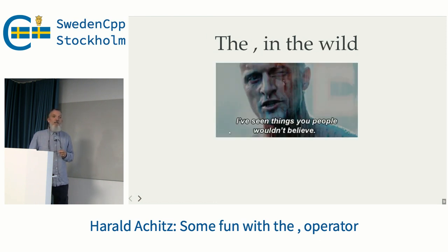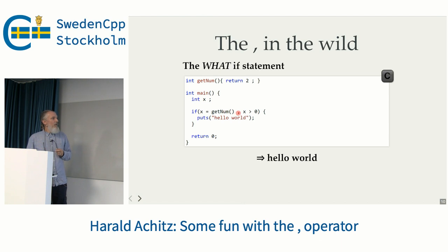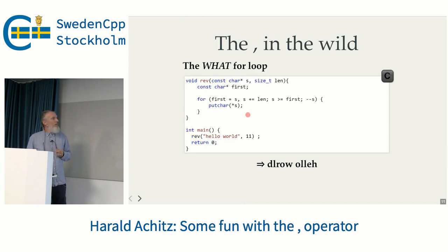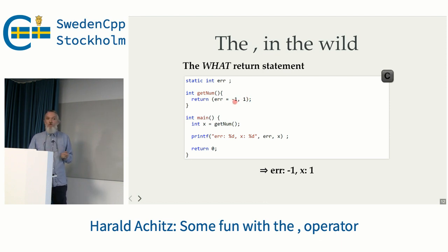Comma operator in the wild — what existing code looks like. Here we have some variable, we assign it, and after this we check the condition using the built-in operator — that's very fun — and this would print out 'hello world'. The same concept applies also to for loops; it means we wrote C code. I have marked this as a bad example. Also popular: maybe it's assigning the error number and then returning the value — works perfectly fine, you have it on one row.